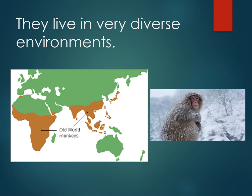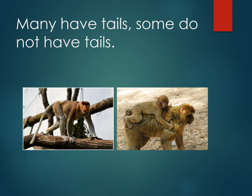Old World Monkeys range even north into the colder regions of Japan. To the right is the Snow Monkey, which comes from Japan and lives in a very cold environment. Again, many Old World Monkeys have tails, while some do not.